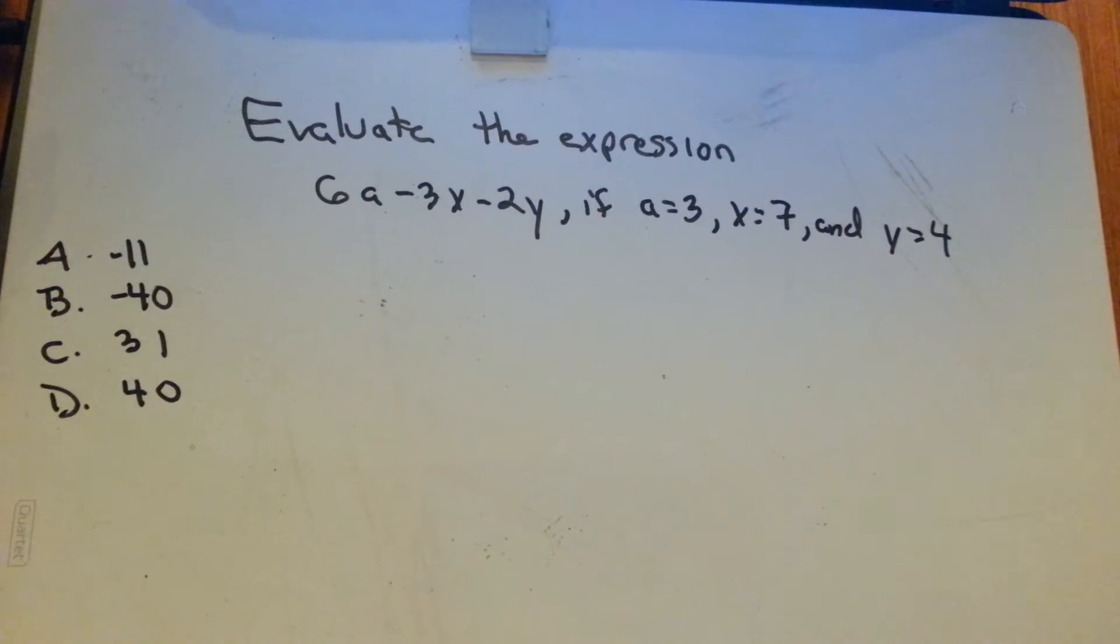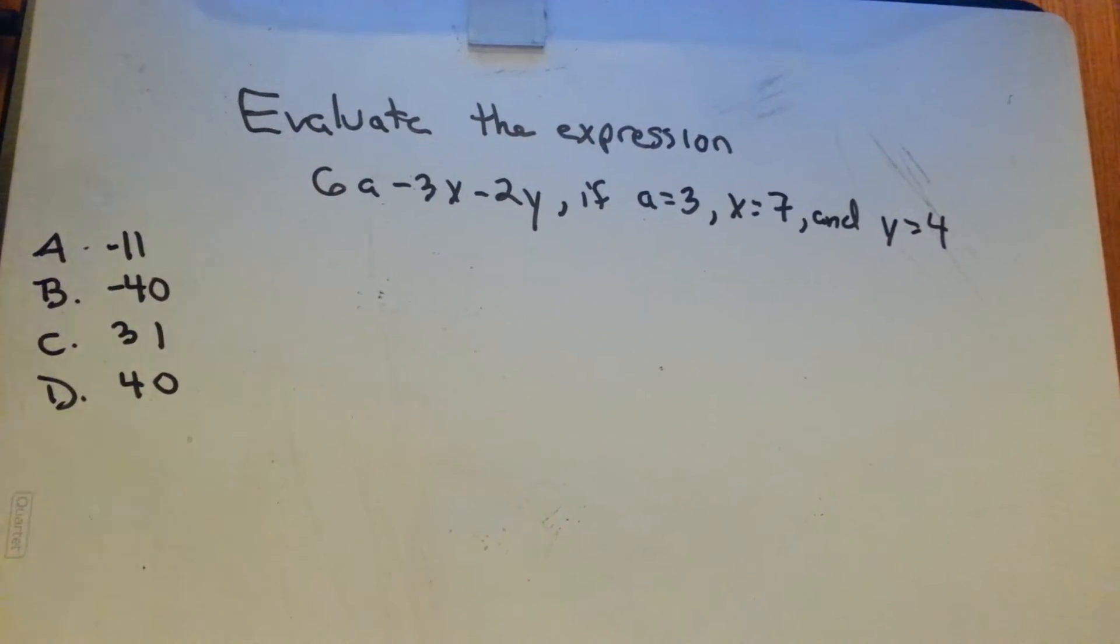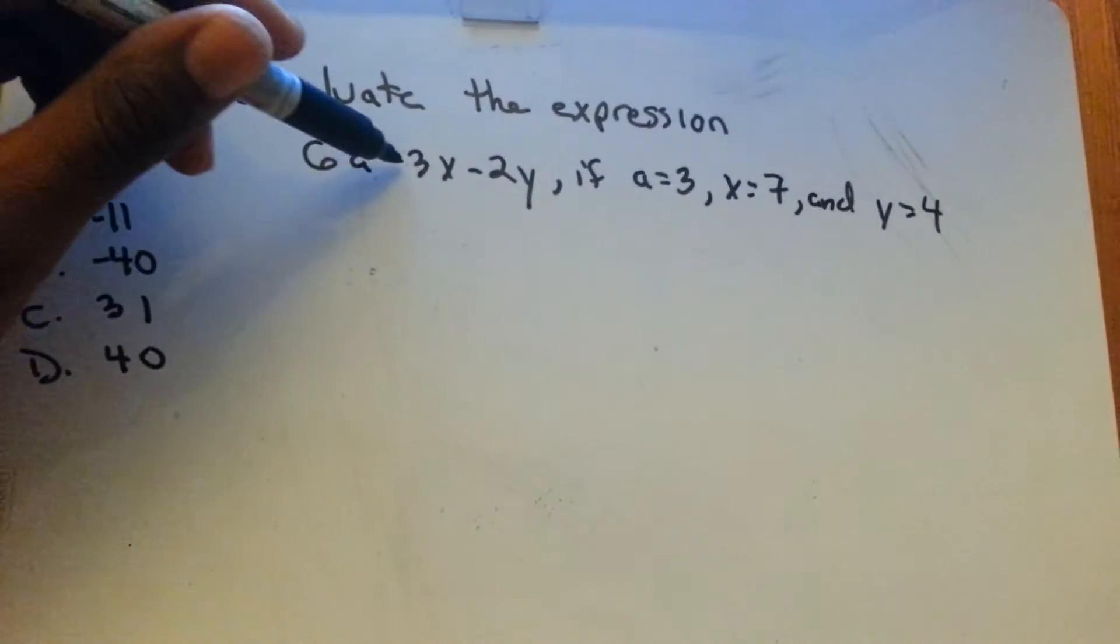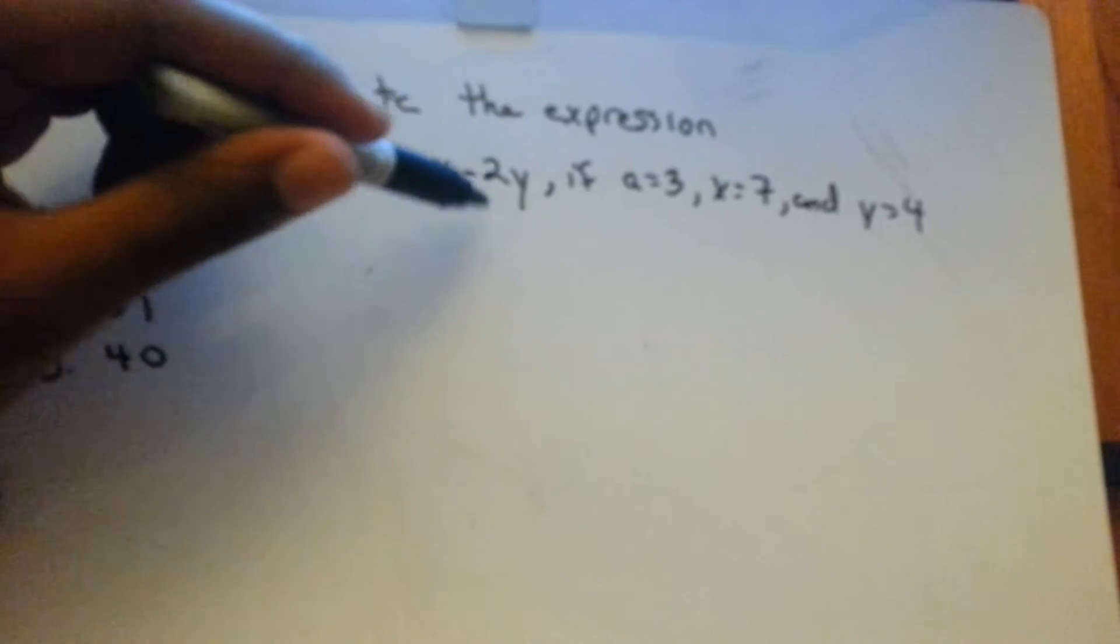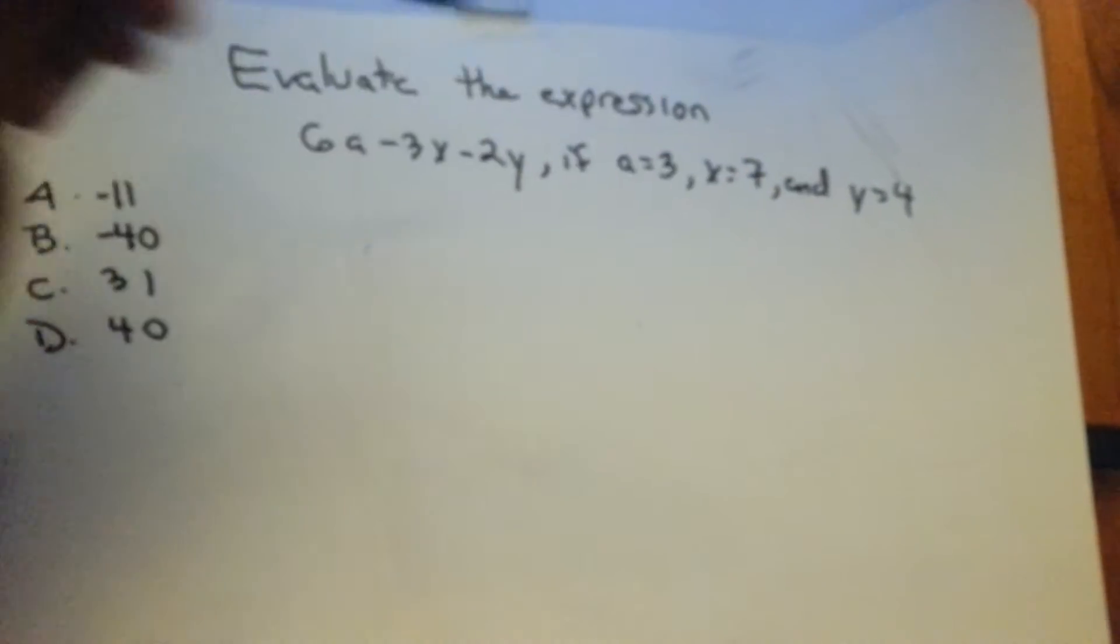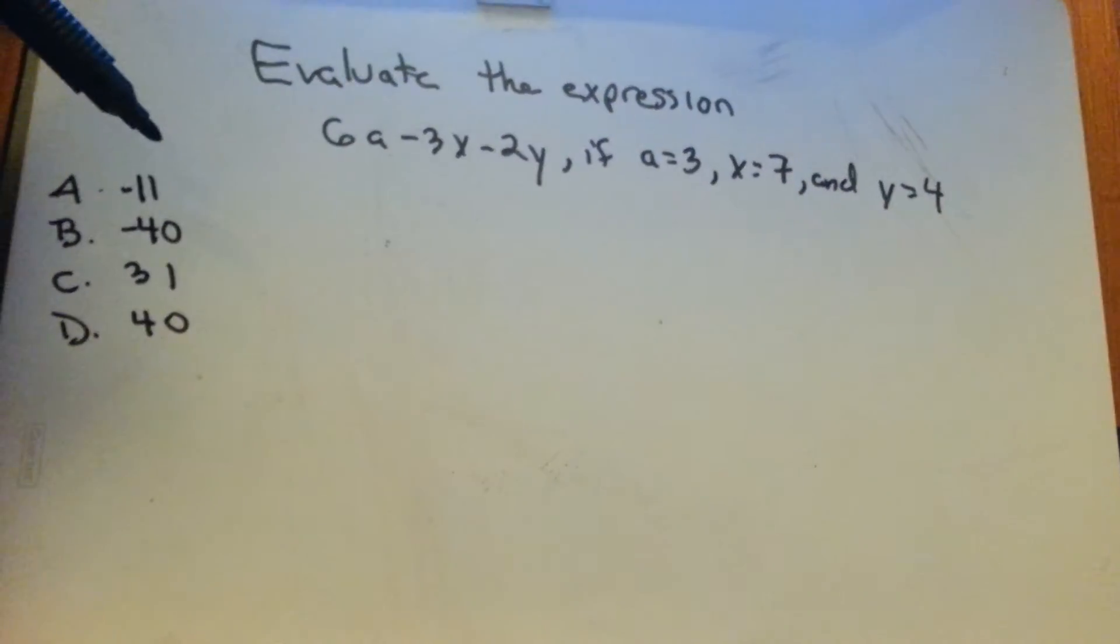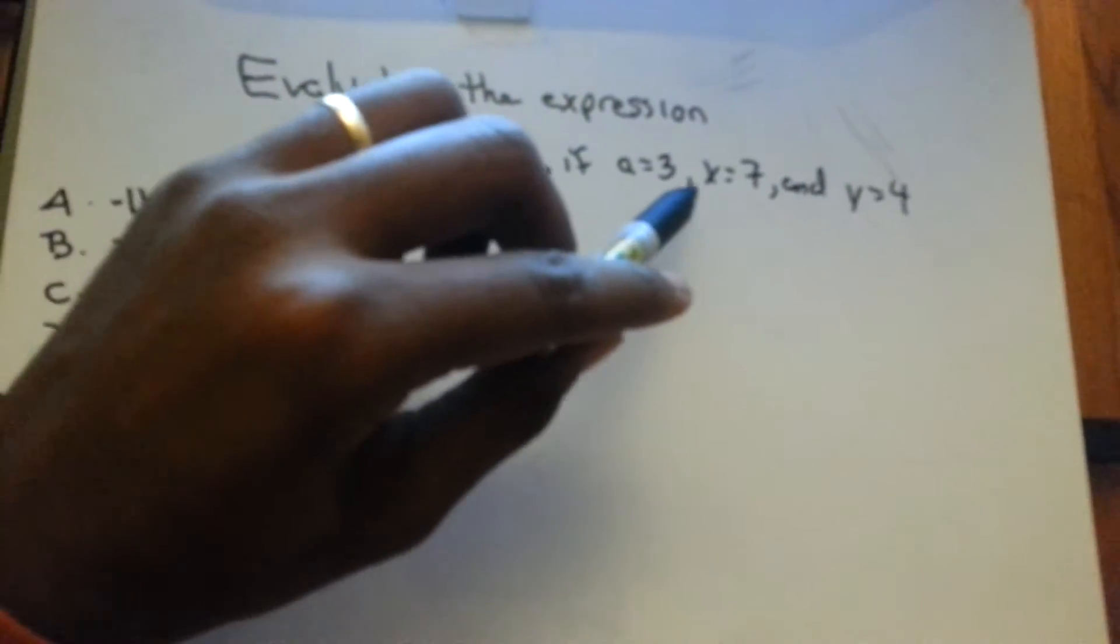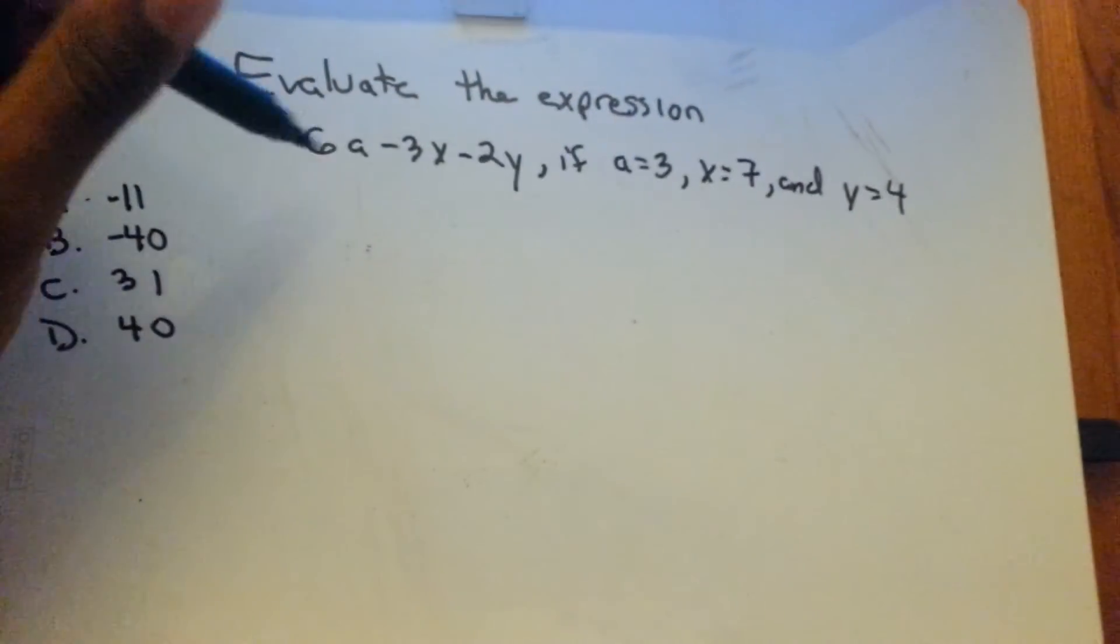Hey, this problem is about evaluating the expression 6x minus 3x minus 2y if x equals 3... or sorry, a equals 3, x equals 7, and y equals 4. So basically what you do is just substitute in each of these values for whatever they are in the equation.